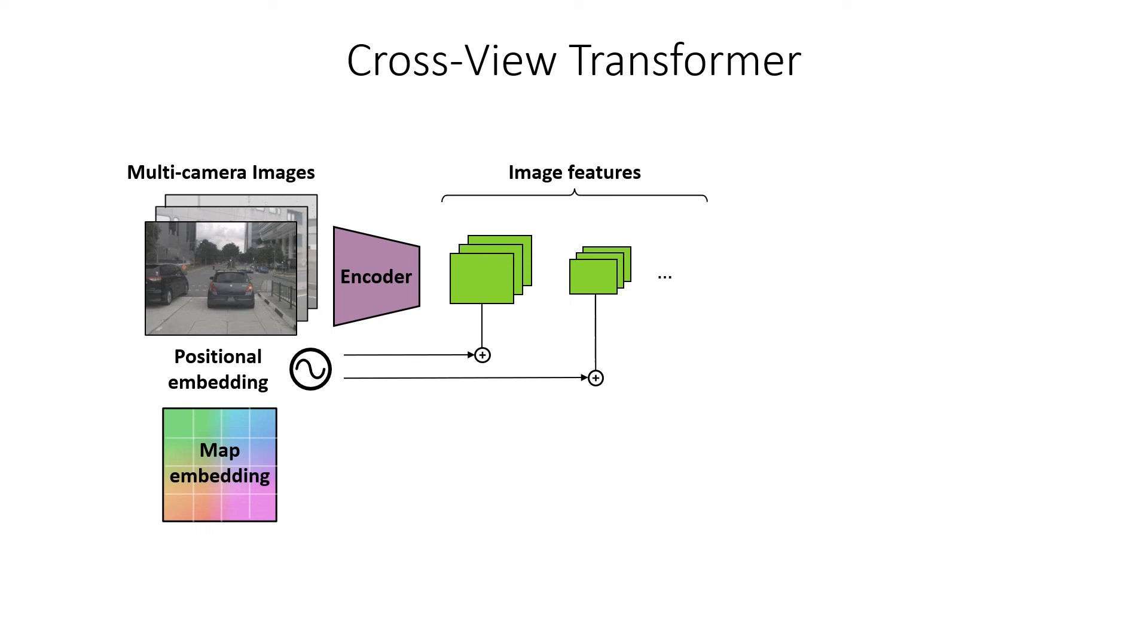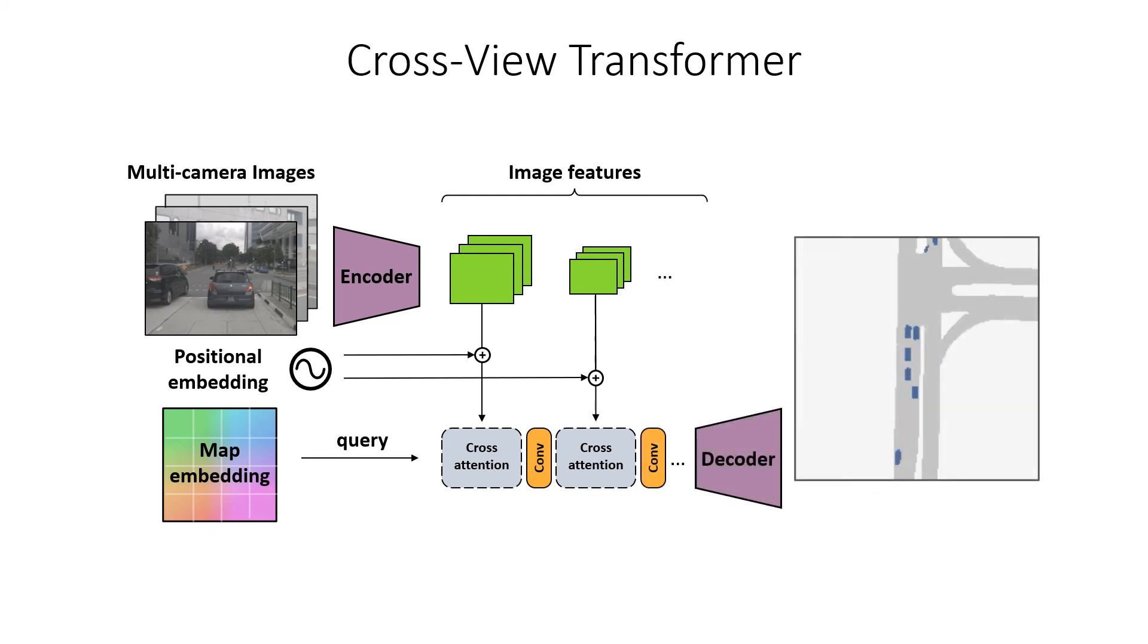After we encode these images, the MapView embedding, which is learned during training, goes through multiple iterations and builds up an ever more accurate estimate of the geometric layout of its surroundings. Finally, the decoder produces the MapView segmentation at full resolution.